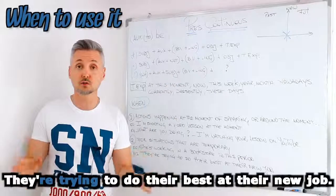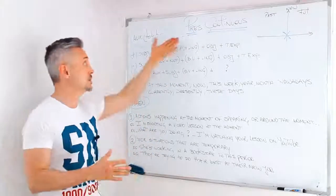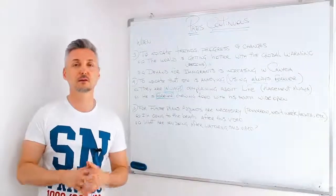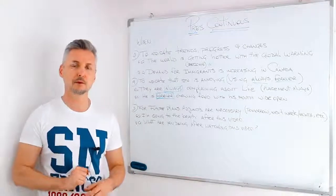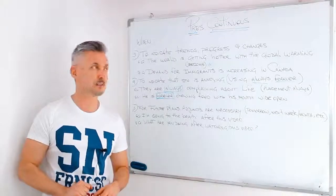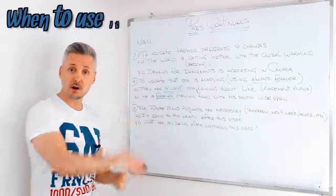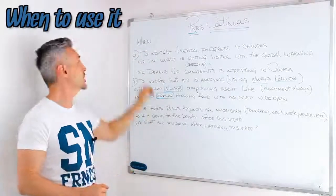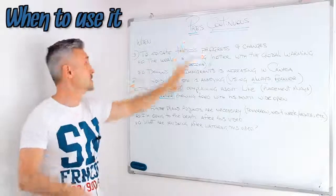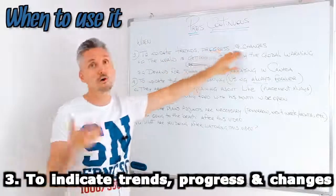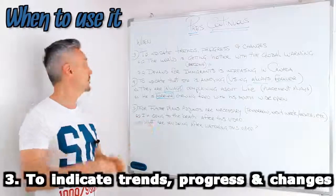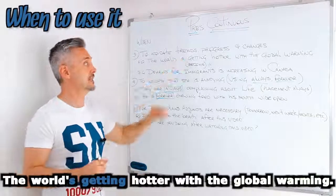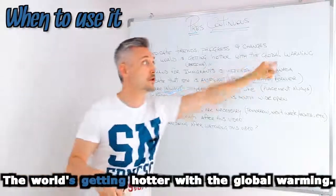So I'm going to erase this and show you three other ways to use the present continuous. I've already talked about the present continuous compared with the present simple — if you wish to watch that lesson, you may click here. Going back to our lesson, the third point: we use the present continuous to indicate trends, progress, or changes. For example, the world is getting hotter with the global warming — is getting, is becoming hotter.